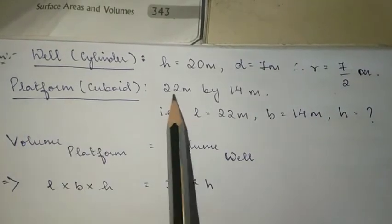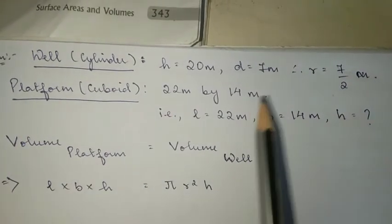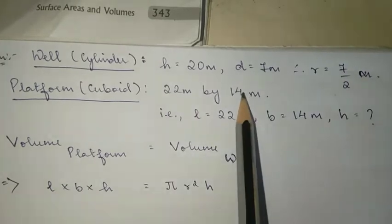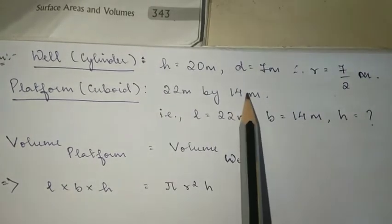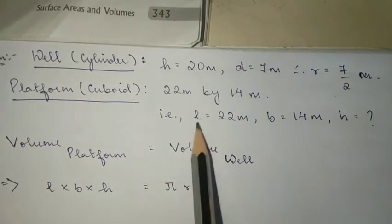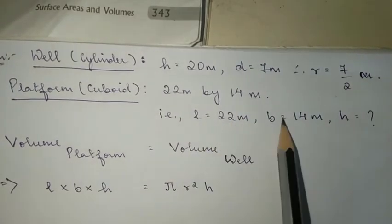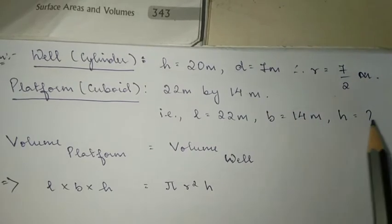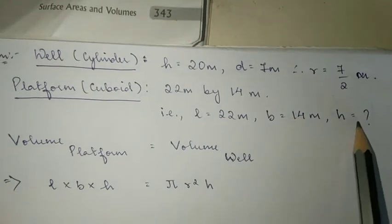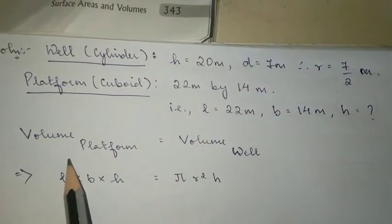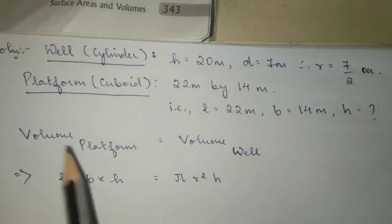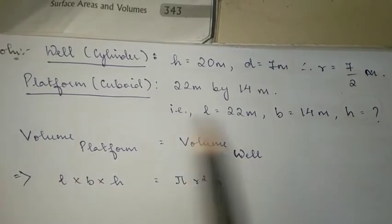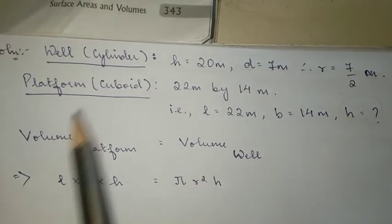It is in the shape of a cuboid, 22 by 14 meters. The volume of the platform is equal to the volume of the well. The platform is a cuboid.